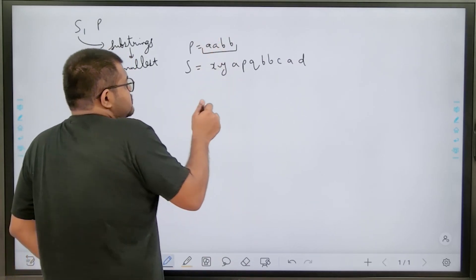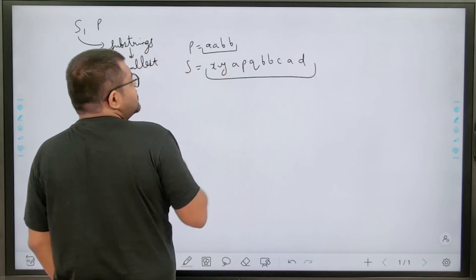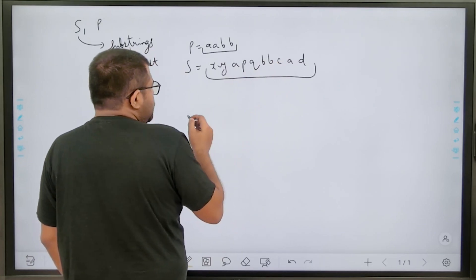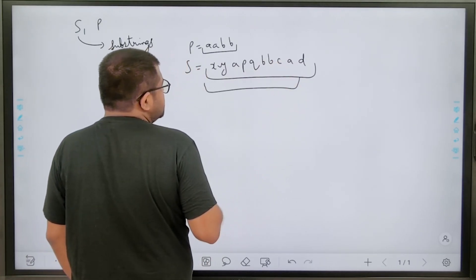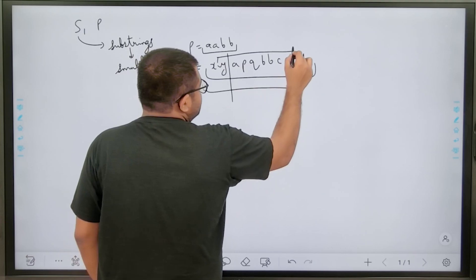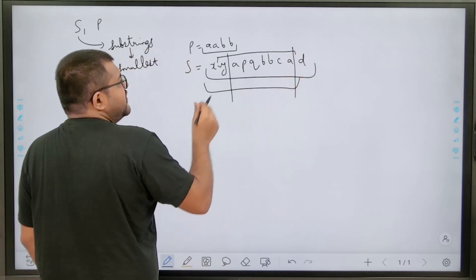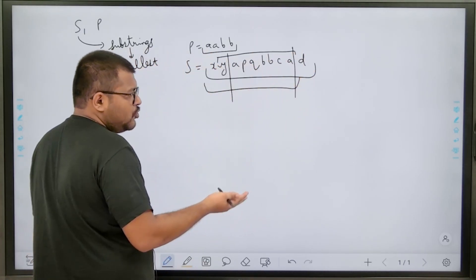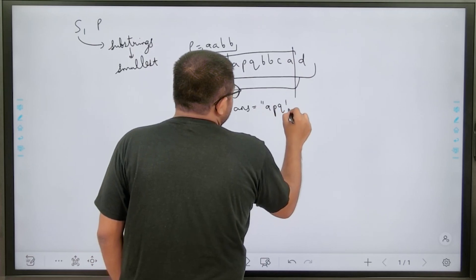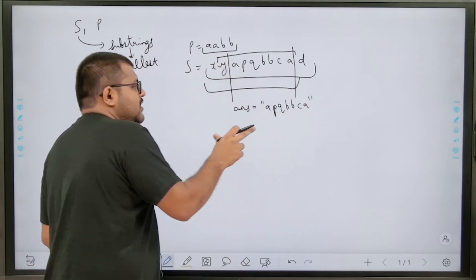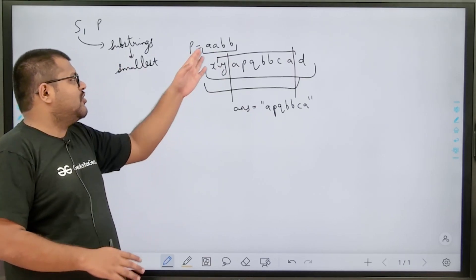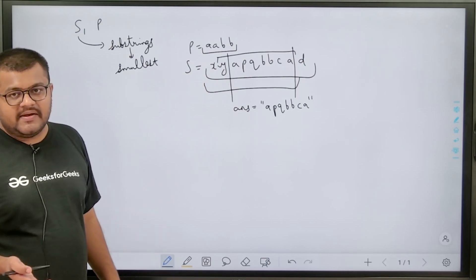Does this substring contain all the characters of P? Are there two A's and two B's? Yes. But is this the smallest length? No. We can keep reducing it. My substring will contain two A's and two B's. We reduce it further until it can no longer be reduced while still satisfying the condition. So my answer would be A, P, Q, B, B, C, A — this is the smallest length substring which contains all the characters of P. In case there is no such substring, we return minus one.